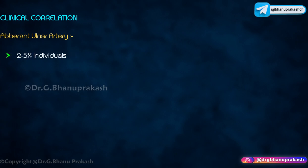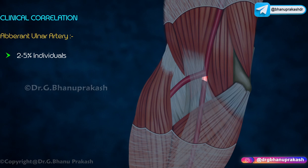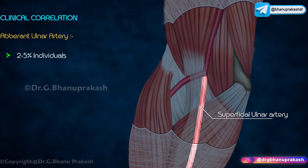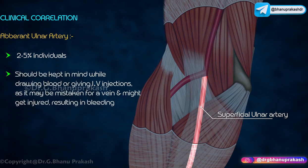Clinical correlation — aberrant ulnar artery: in about two to five percent of individuals, the ulnar artery originates proximally in the arm and passes superficial to the forearm flexor muscles. In such cases it is known as the superficial ulnar artery. This should always be kept in mind while drawing blood or giving intravenous injections, as this artery may be mistaken for a vein and might get injured, resulting in bleeding.